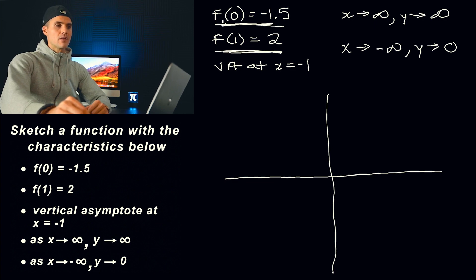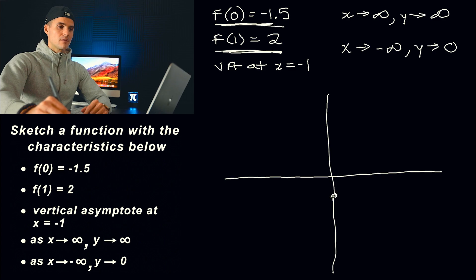So notice that these two here, f(0) = -1.5 and f(1) = 2, those are actual coordinates on this function. So we're going to have a coordinate here, let's say that's (0, -1.5). And then we're going to have a coordinate, let's say somewhere over here, that's going to be like (1, 2).